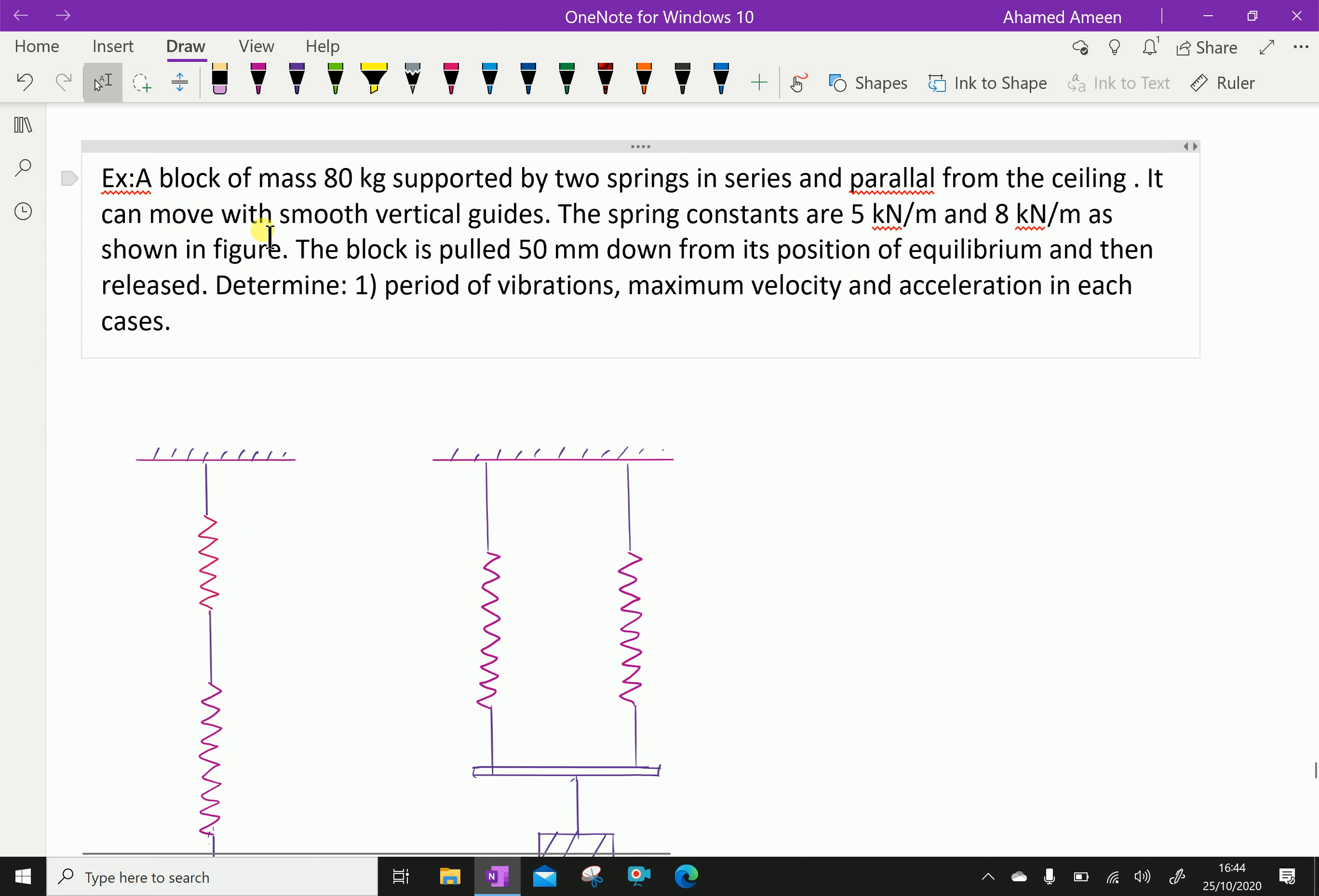Example: A block of mass 80 kg supported by two springs in series and parallel from the ceiling. It can move with smooth vertical guides. The spring constants are 5 kN per meter and 8 kN per meter as shown in figure. The block is pulled 50 mm down from its position of equilibrium and then released. Determine: period of vibrations, maximum velocity and acceleration in each case.